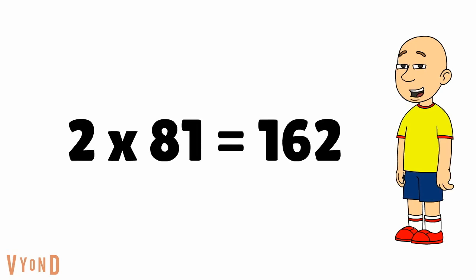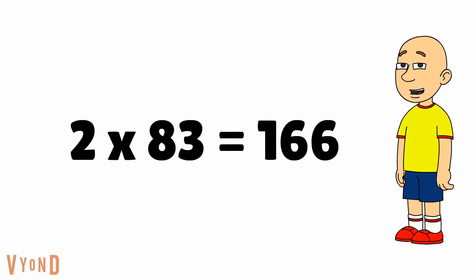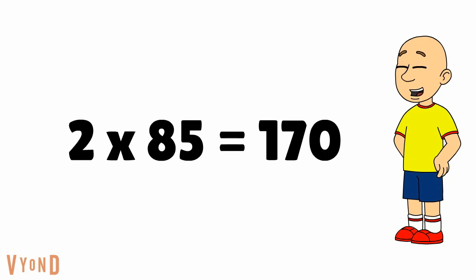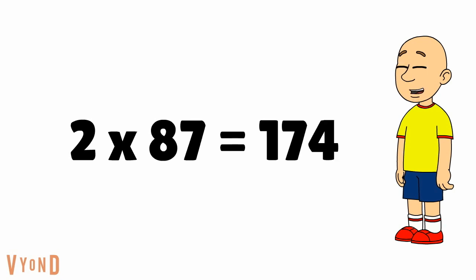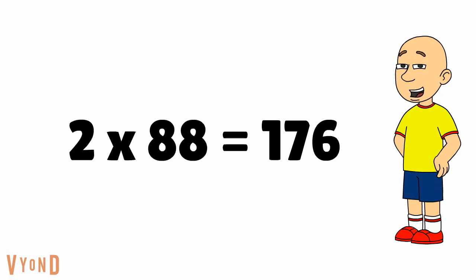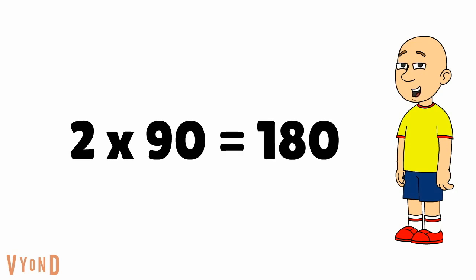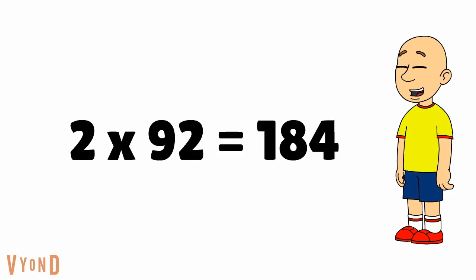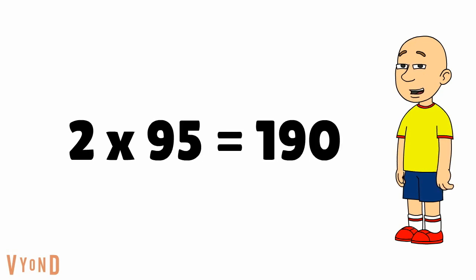2 times 80 equals 160. 2 times 81 equals 162. 2 times 82 equals 164. 2 times 83 equals 166. 2 times 84 equals 168. 2 times 85 equals 170. 2 times 86 equals 172. 2 times 87 equals 174. 2 times 88 equals 176. 2 times 89 equals 178. 2 times 90 equals 180. 2 times 91 equals 182. 2 times 92 equals 184. 2 times 93 equals 186. 2 times 94 equals 188. 2 times 95 equals 190.